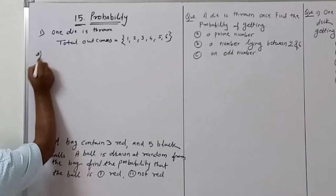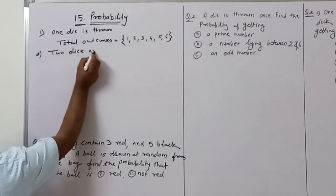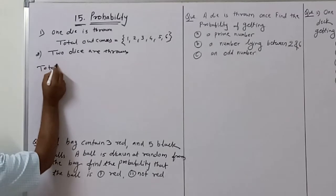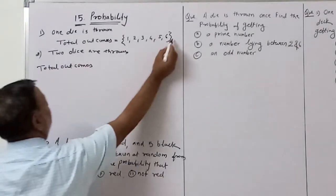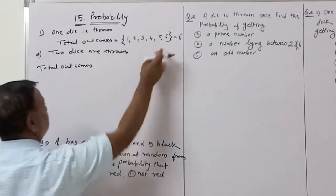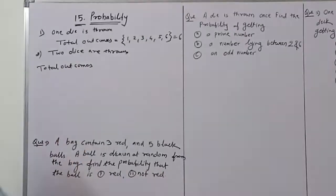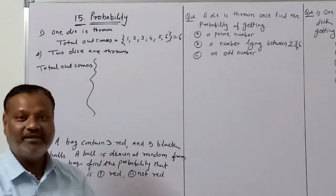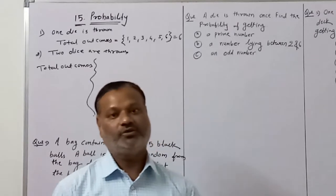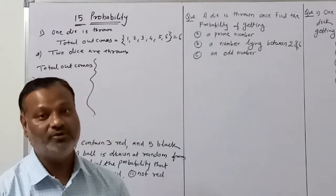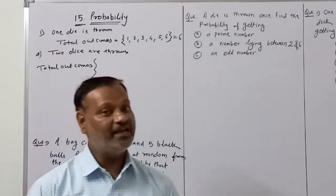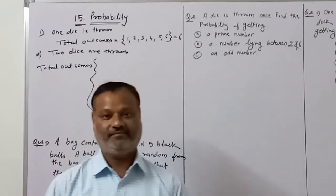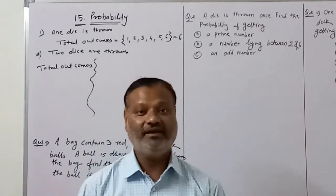Now if two dice are thrown, the total outcomes for one die are six: 1, 2, 3, 4, 5, 6. When two dice are thrown, we look at the combinations. For the first die showing 1, the second die can show 1, 2, 3, 4, 5, or 6 - these are six combinations regarding the first die.